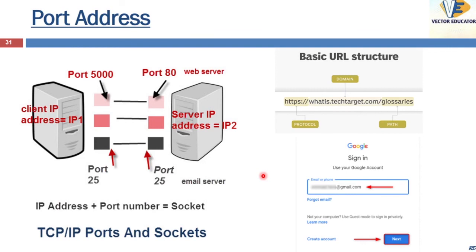After this networking and communication class, you may have many questions about security on networks. We will have a separate class on security on computers and networks where we will cover malware, viruses, firewalls, security precautions, and encryption. We have understood much of how the internet functions in today's topic, but there are some important terms with respect to the internet that we will cover in our next class. Thank you so much and see you in the next class.